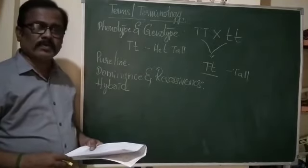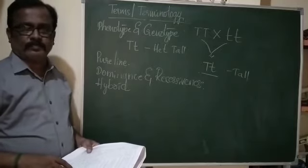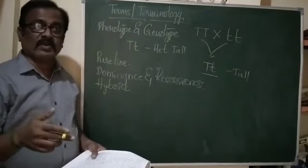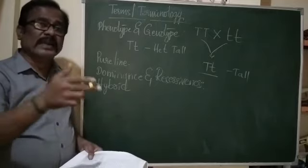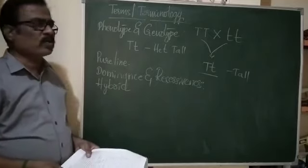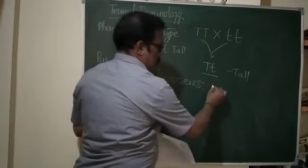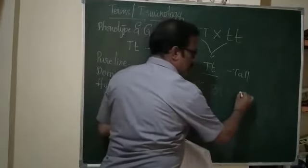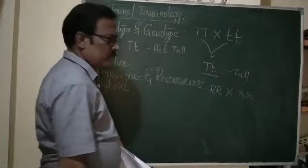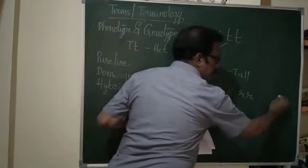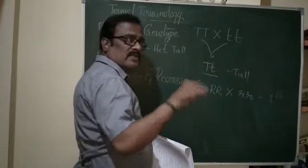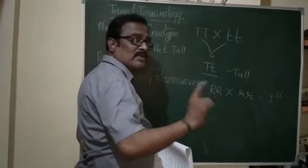The next term is reciprocal cross. It is the second cross of the same genotype in which there is a reversal of sexes. For example, consider rough-colored rats with smooth-natured rats: the first cross is female rough with male smooth. Reciprocal cross is the second cross of the same genotype where there is a reversal of sexes.